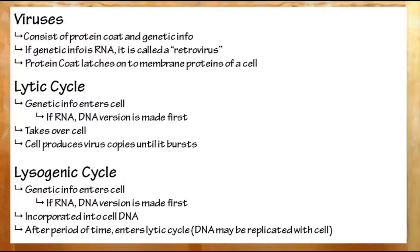In the lytic cycle, the cell's machinery is taken over and thousands of viruses are produced until the cell bursts. In the lysogenic cycle, the DNA will enter joined with the cell's DNA, and then after a certain period of time, enter the lytic cycle. If RNA is injected, it will make a DNA copy first, and then go into either the lysogenic or the lytic cycle.